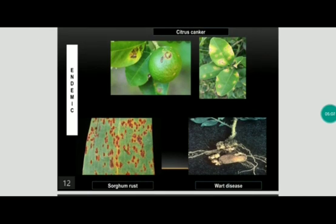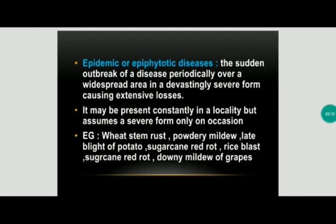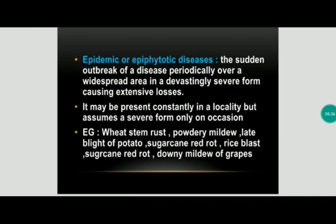Epidemic disease is otherwise known as epiphytotic disease. The disease suddenly breaks out over a widespread area, causing great extensive losses. It may be present constantly in a locality but attains severe form only under favorable conditions. Examples include powdery mildew, late blight of potato, sugarcane red rot, rice blast, and downy mildew of grapes.